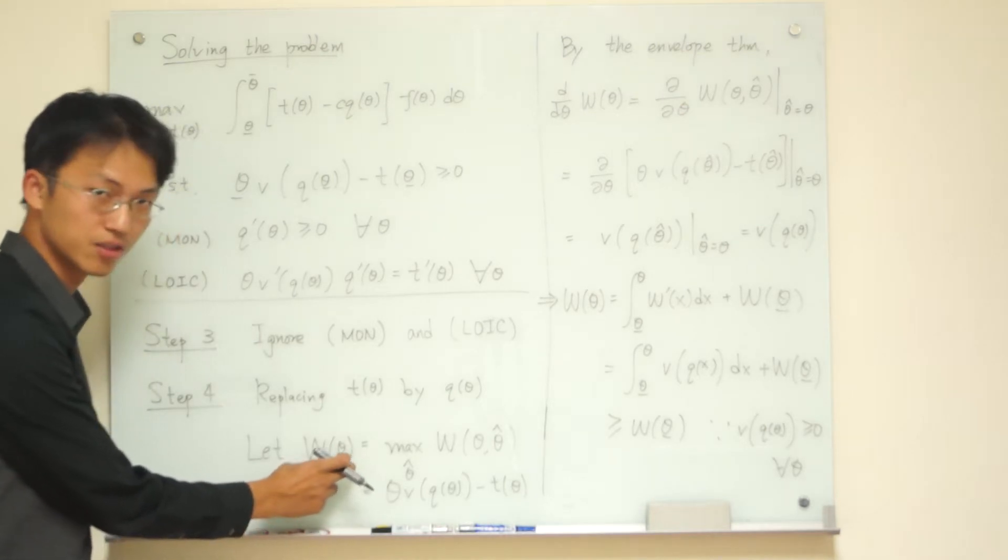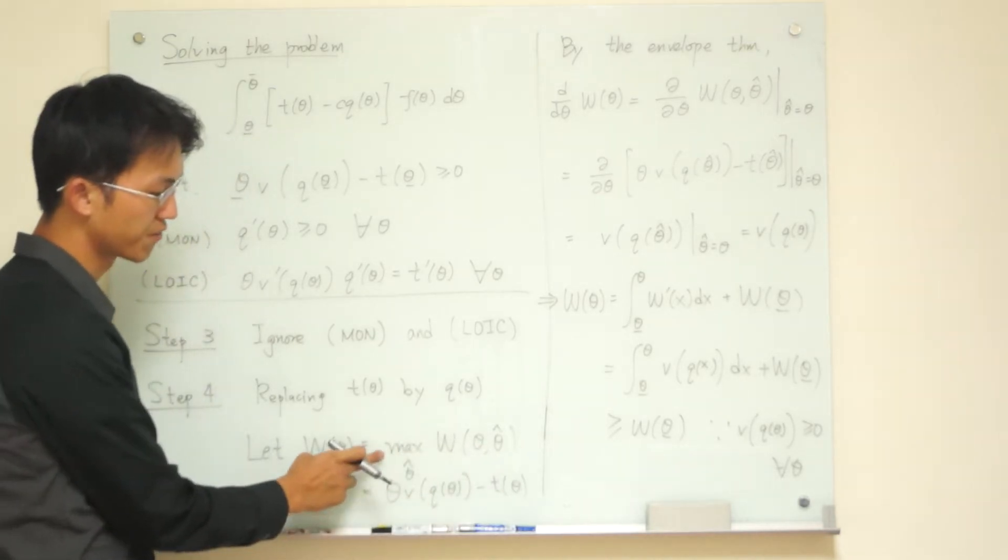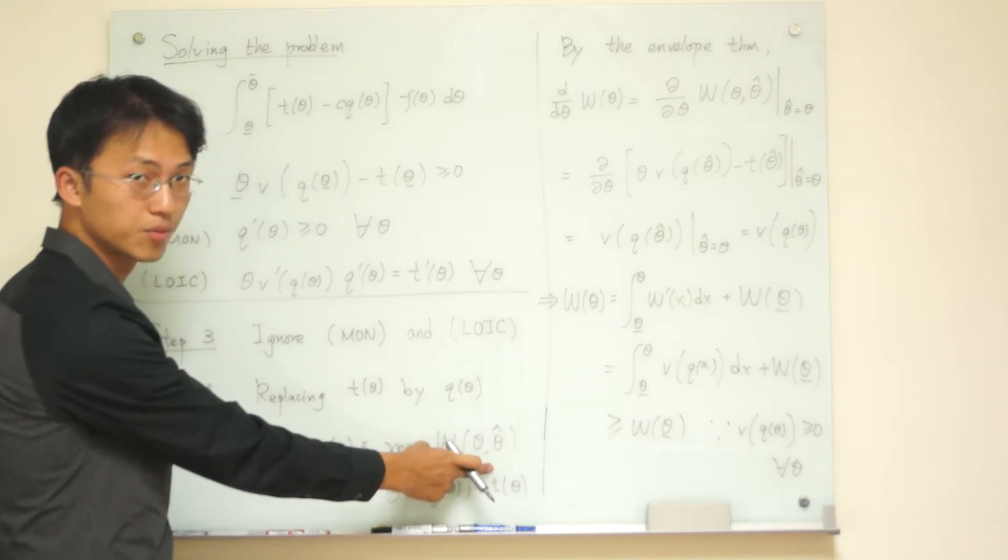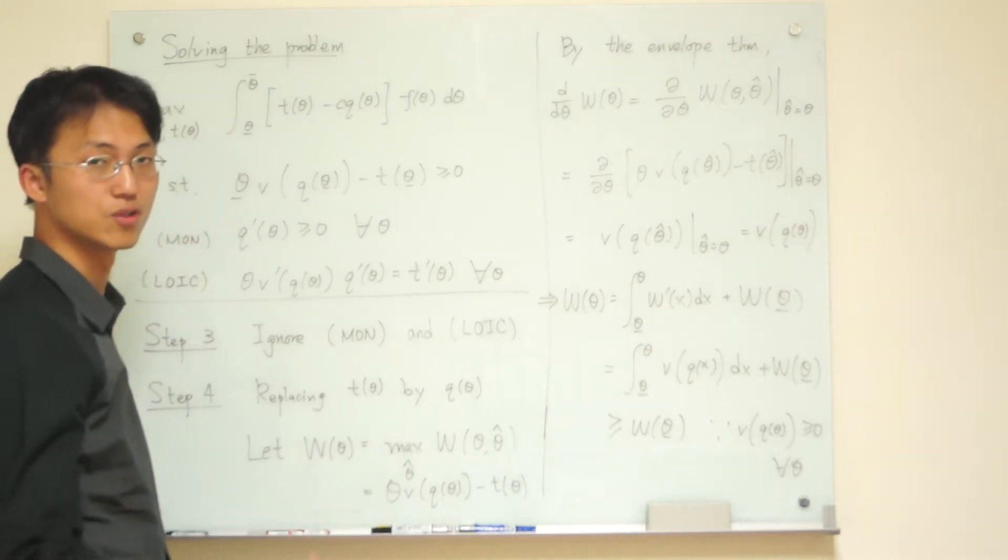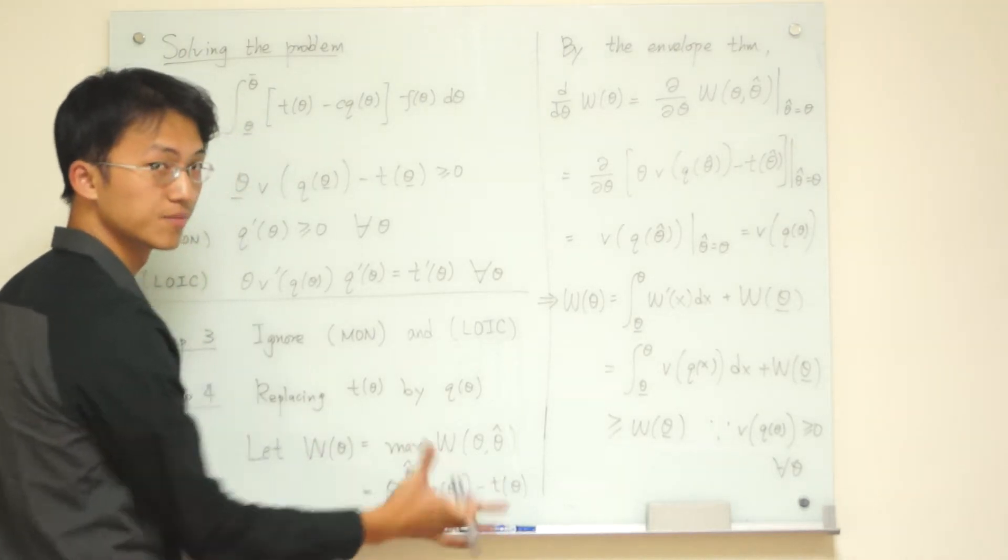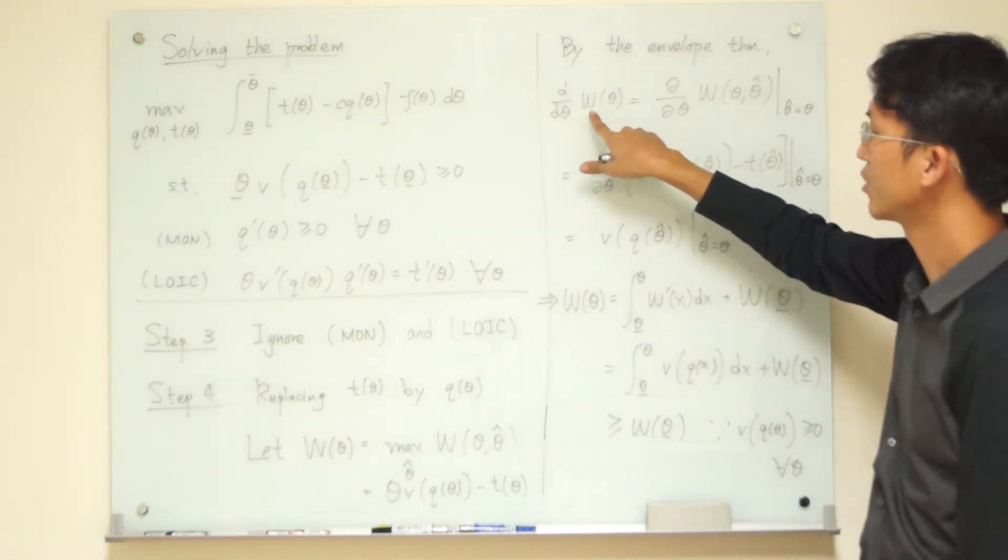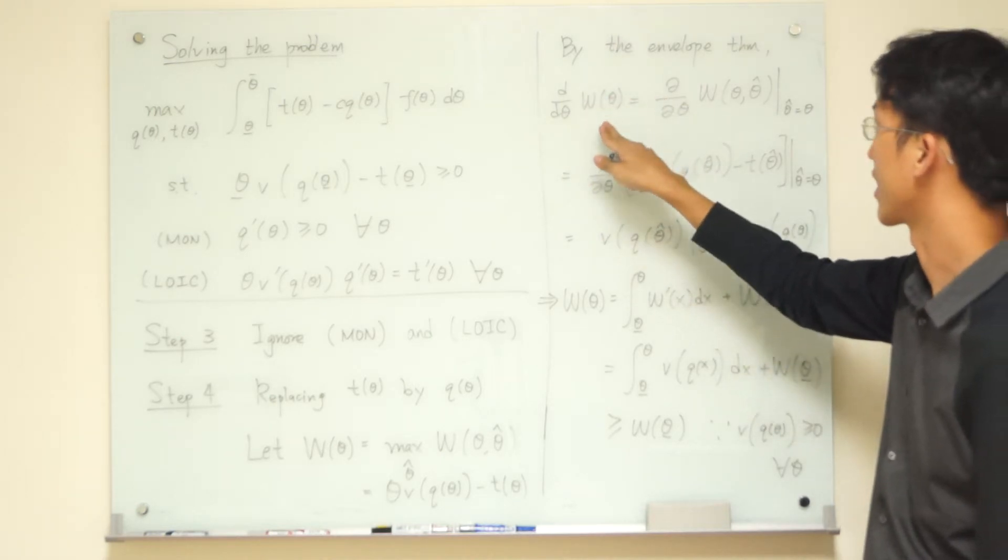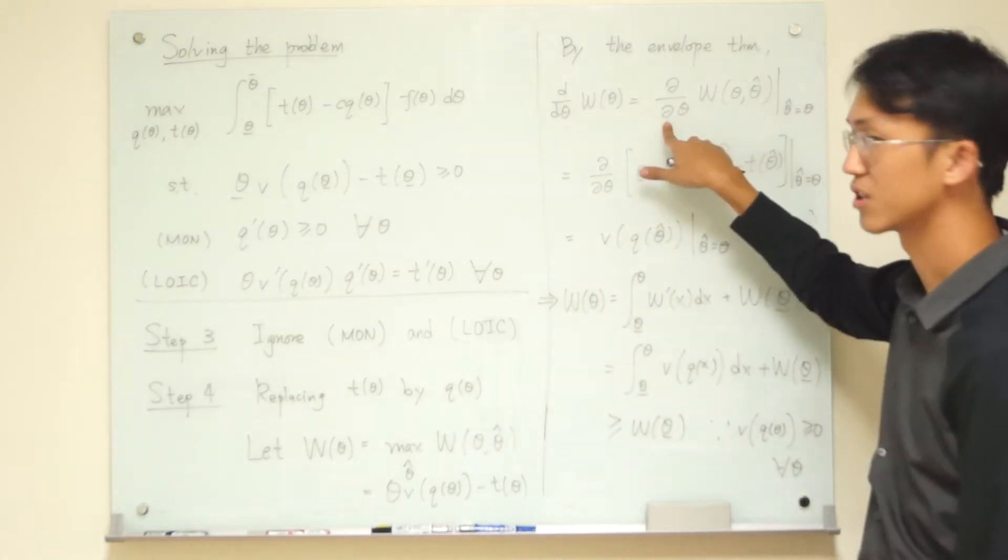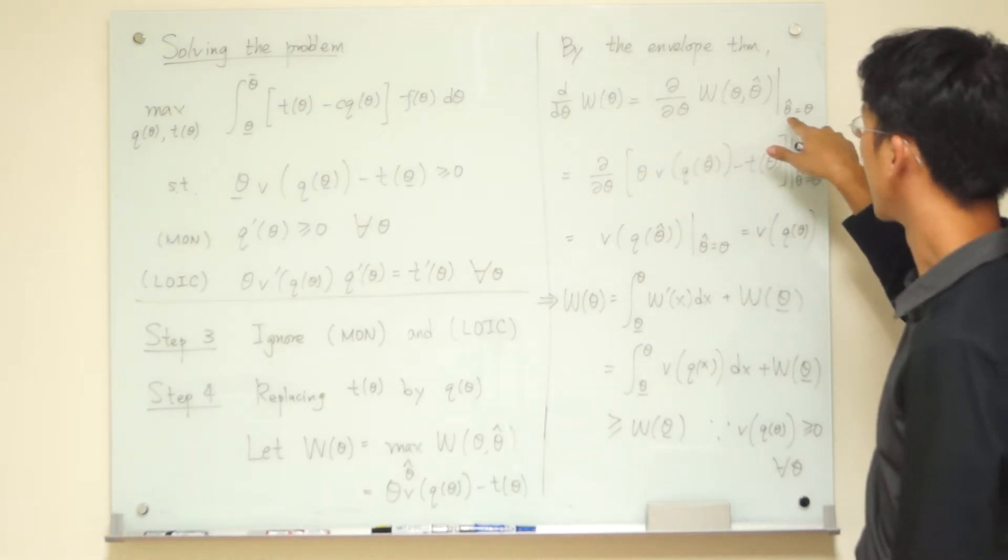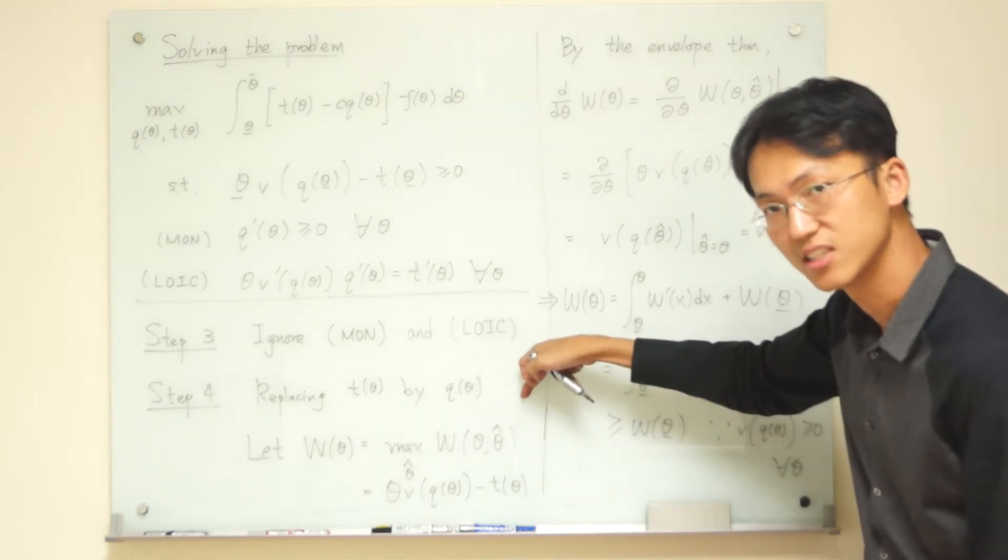So, let me first define one term. W of theta. This will be what happens after each agent finds its optimal solution or optimal type to report. We know it's theta. Right? So, that's why W of theta is the equilibrium payoff for each agent. Yeah, in this format. W of theta. Now, according to the envelope theorem, we know this. If we do W of theta, the first order derivative of theta, it can be found by first, take the original function, do the differentiation first, and then plug in the optimal solution. Here, to remind you, theta is the parameter. Theta hat is the variable.